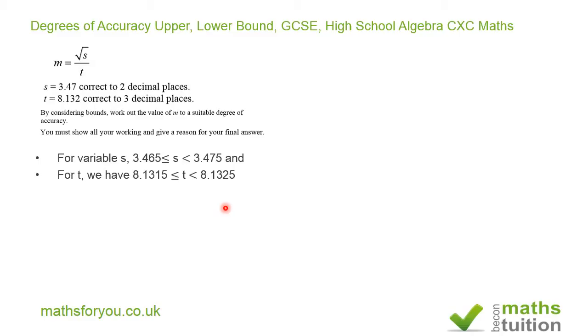Now we want to find the square root of S for both the lower bound and upper bound. So the square root of S lower bound is 1.8615 and the square root of S upper bound is 1.8641.